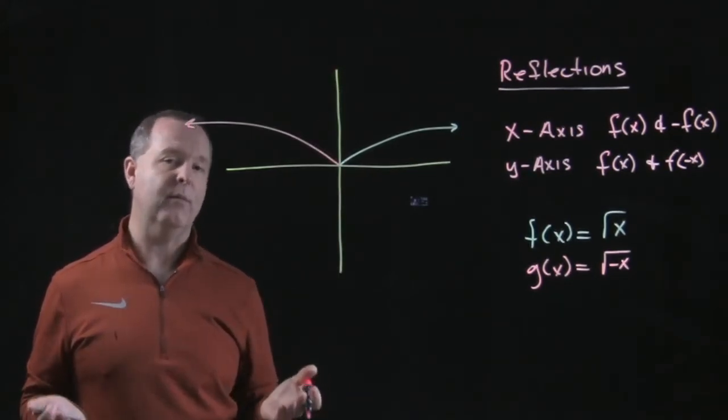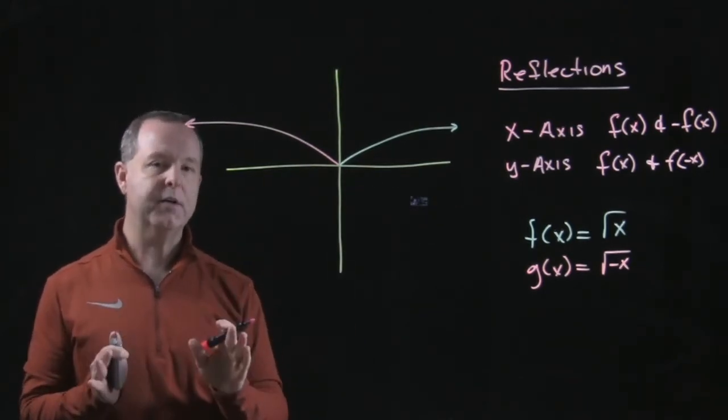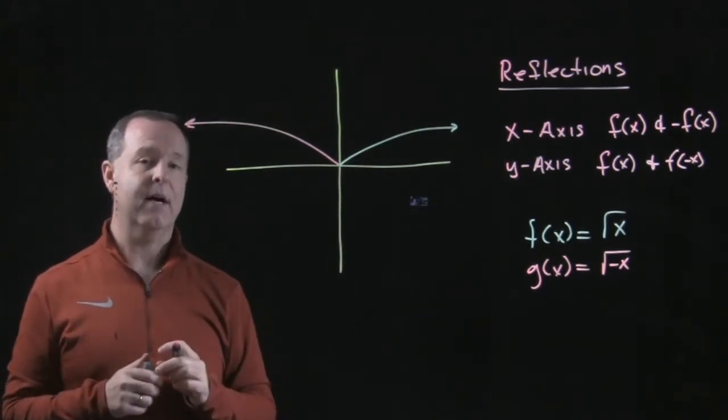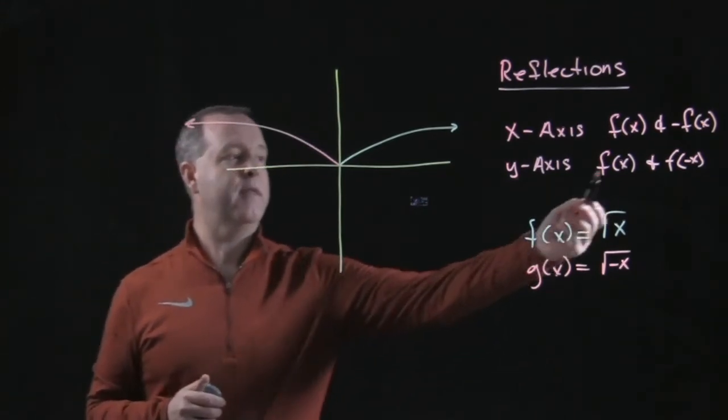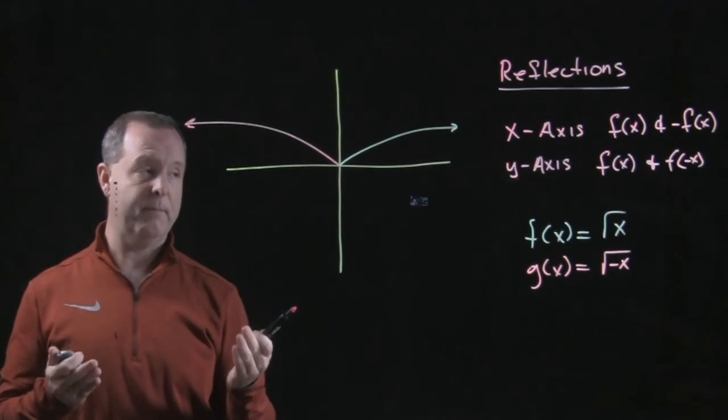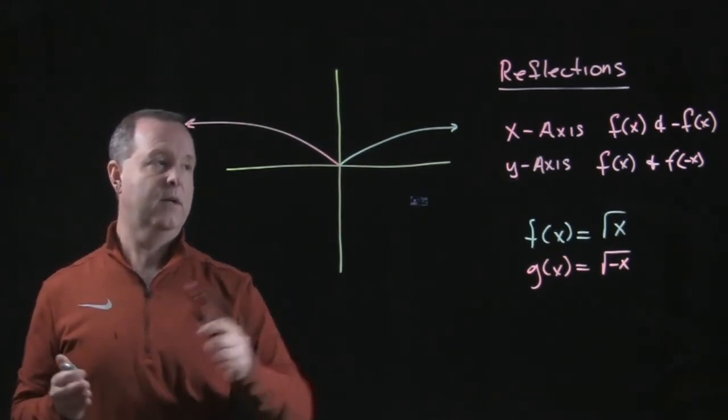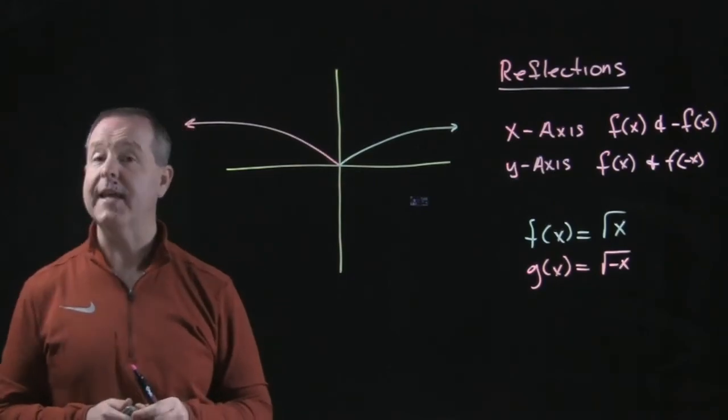So that's how you can look at reflections of both the x-axis and the y-axis: understand where that negative is coming from. Is the negative within the function as it is here in my y-axis comparison? Or is my negative outside of the function which happens in a reflection about the x-axis?